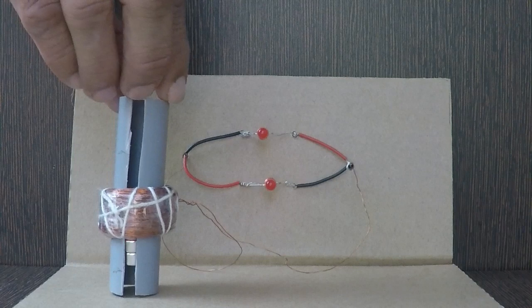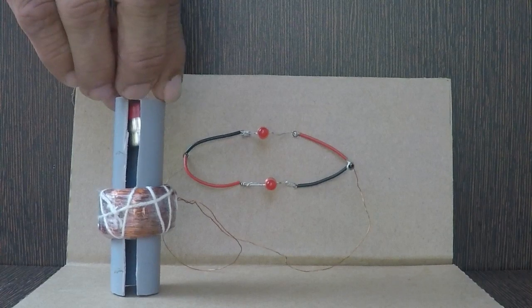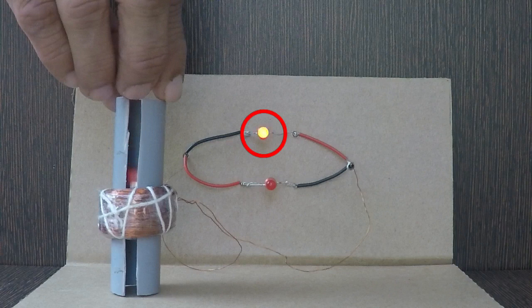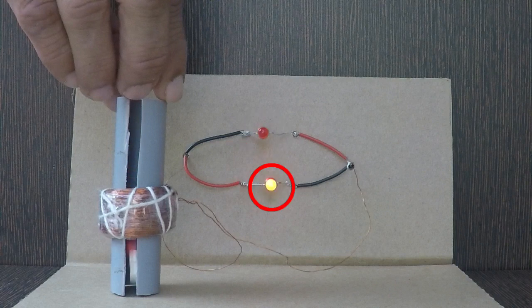However, each time it changes direction. The magnetic field changes two times: first when it enters the solenoid and later when it leaves the solenoid.